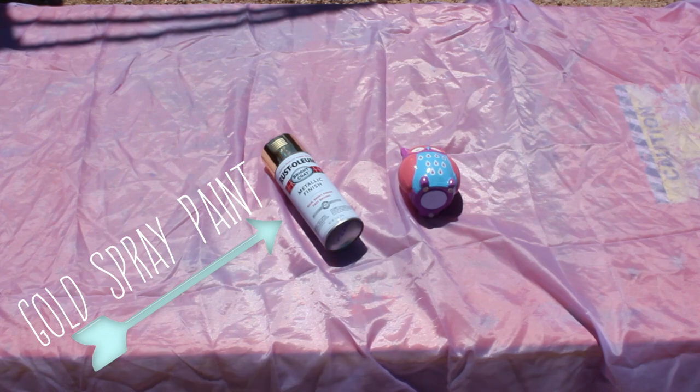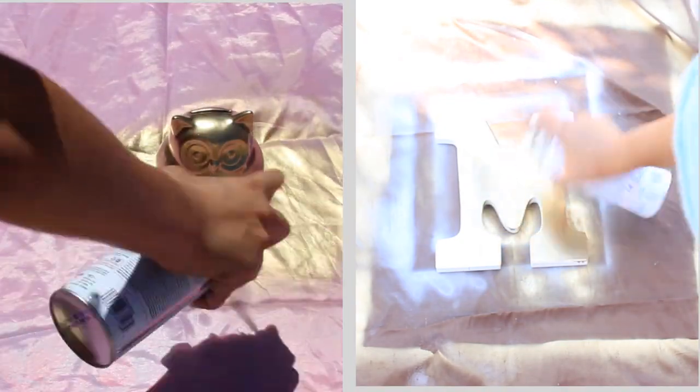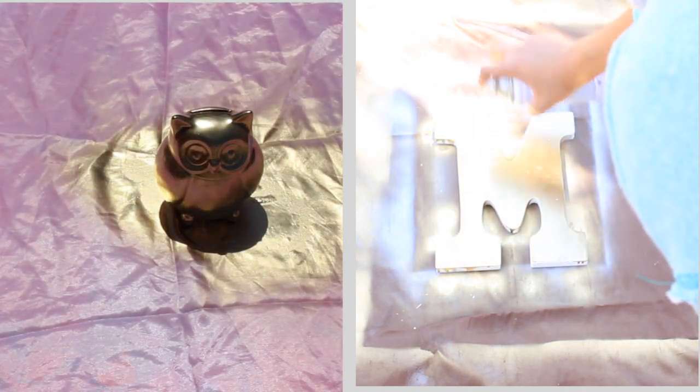For this DIY all you're gonna need is gold spray paint, an owl which I got for 80 cents at Michael's, and an M or your letter which only cost me like 4 dollars. And just spray painted gold is a really easy DIY that adds a great touch to your room.